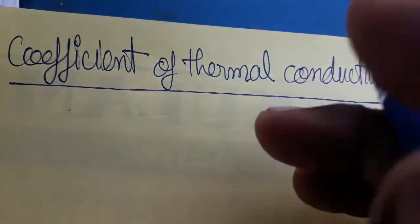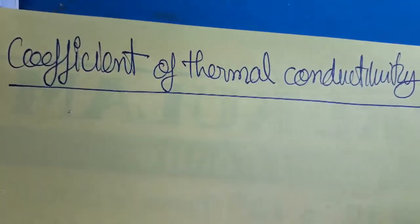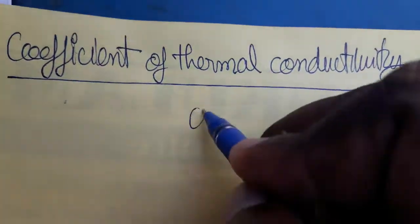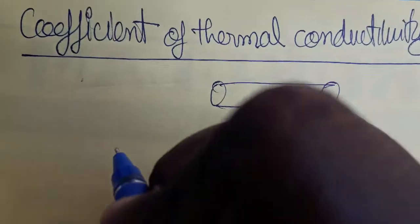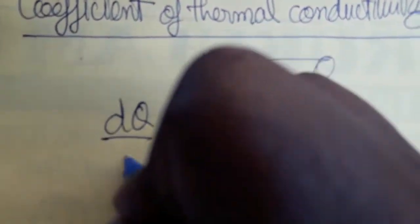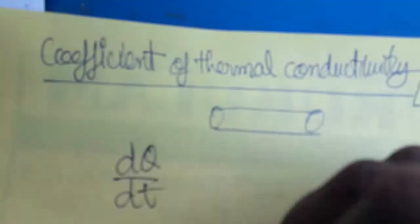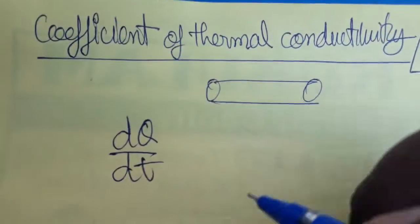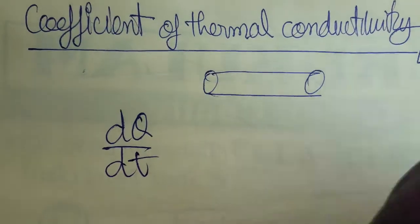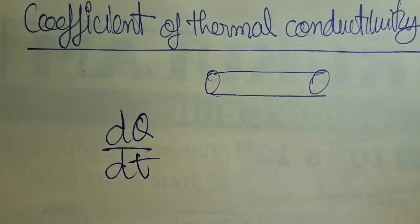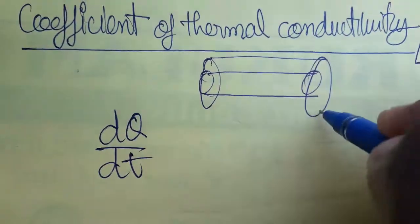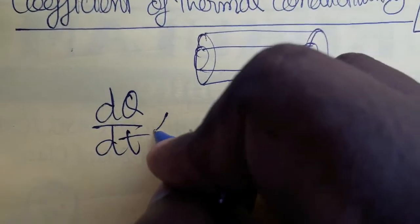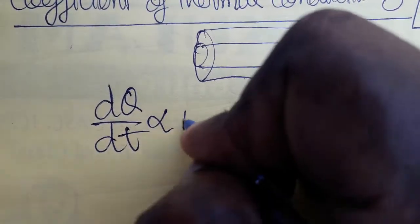Coefficient of thermal conductivity is like conduction of heat from one place to another place. Heat transferring with respect to time — that is the main term. The rate of change of heat with respect to time — if more area is there, the conductivity will be more, so it is directly proportional to area.